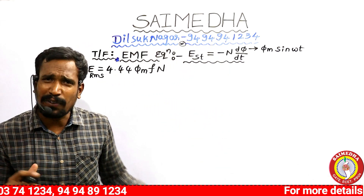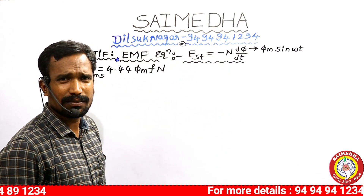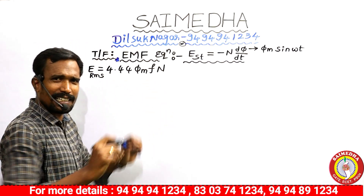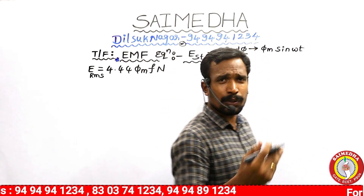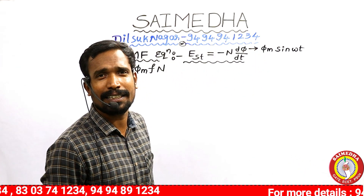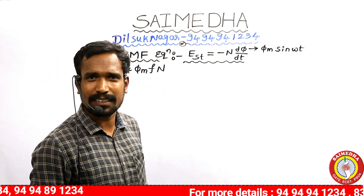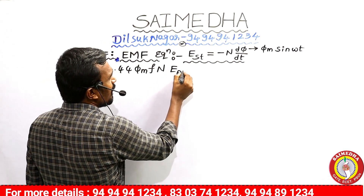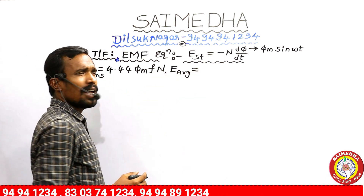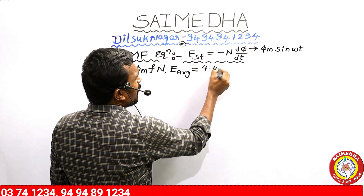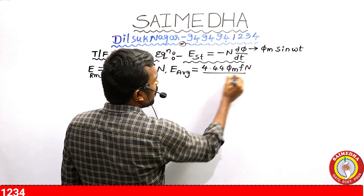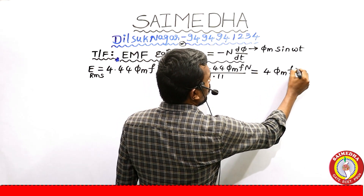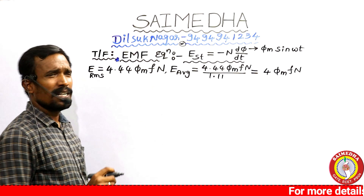If an examiner asks, we can find out the EMF value and the RMS value in terms of turns. Generally this RMS formula is the standard question. But last year in the 2022 SPDCL Junior Linemen exam, the average EMF was asked — not the RMS value. The average EMF equals RMS divided by 1.11, giving: E_avg = 4 · Φm · F · N.